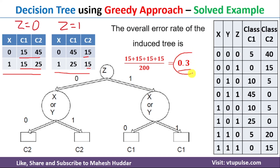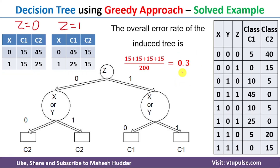The total classification error for this particular decision tree is 0.3. In this video, I discussed how to build the decision tree using the greedy approach for the given dataset, and how to calculate the overall classification error. This is the first part of the problem; the next part will be solved in the next video — the link is given in the description below. I hope the concept is clear. If you like the video, please like and share with your friends, press the subscribe button for more videos, and press the bell icon for regular updates. Thank you for watching.